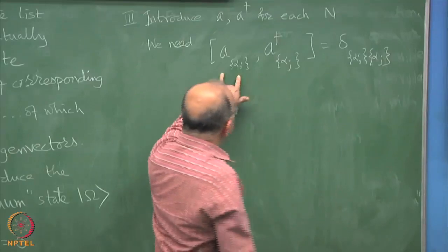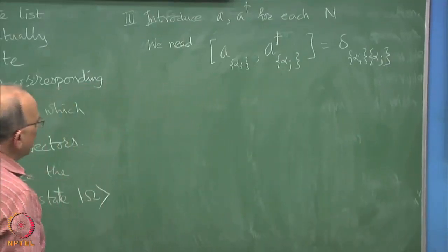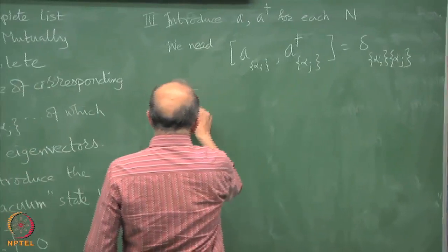You have to have exactly same list to then you get 1 and otherwise everything is other things are 0.